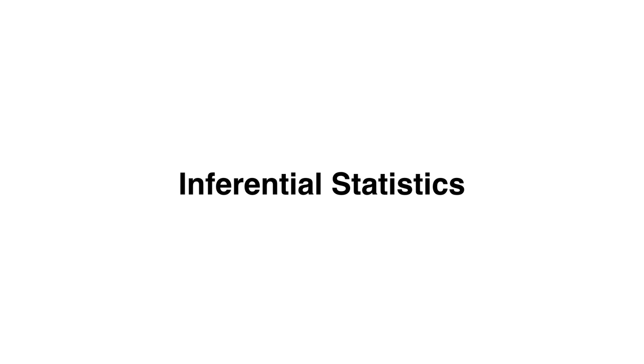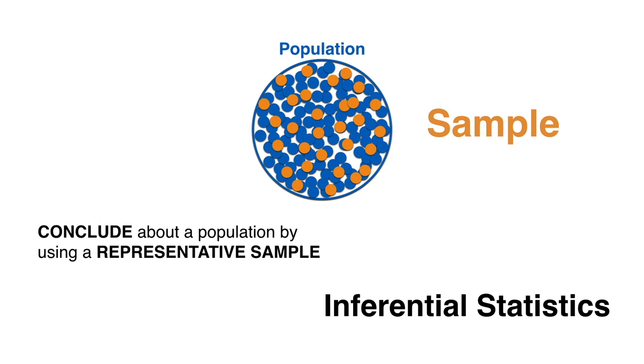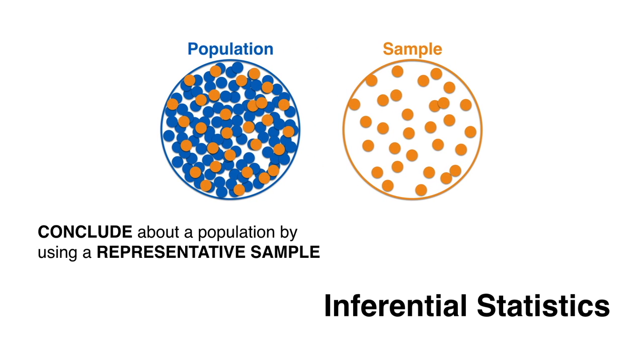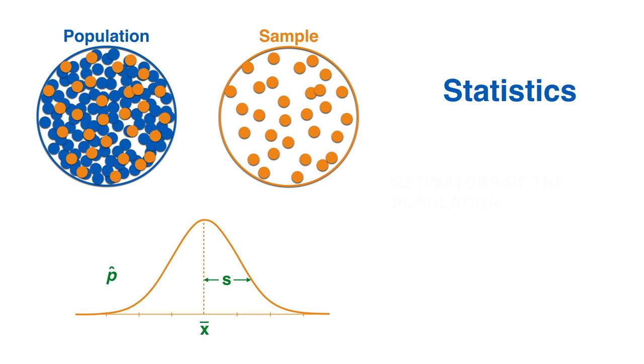As learned in the past module, inferential statistics help to conclude something about a population by using a representative sample to make estimates. The set of individuals present in the sample constitute a random variable following a distribution comprised by statistics that are estimators of the population parameters.